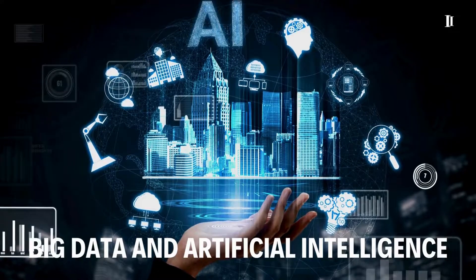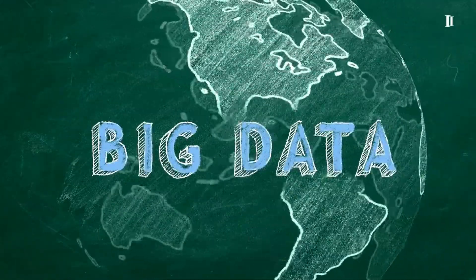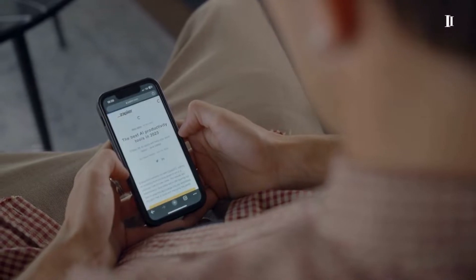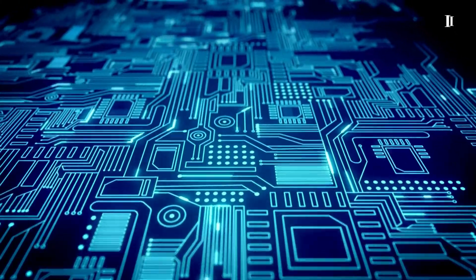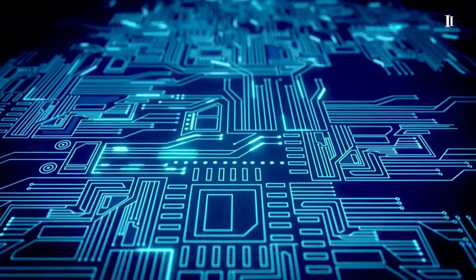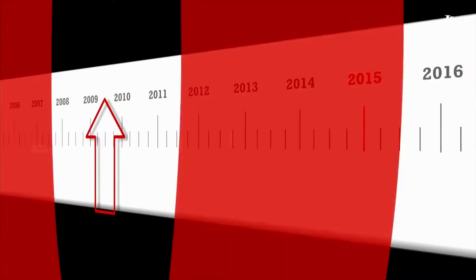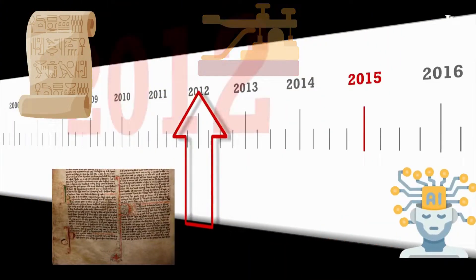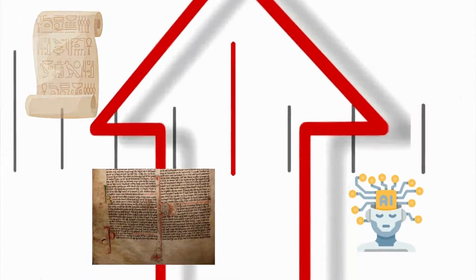Today we find ourselves in the age of Big Data and Artificial Intelligence. Our smartphones, smart devices, and online activities generate immense amounts of data every second. Machine learning algorithms analyze this data, providing insights and predictions that were once unimaginable. The history of data is an ongoing story, continually shaped by technological advancements and the evolving needs of society. The journey from ancient inscriptions to the era of Big Data reflects humanity's constant quest to organize, understand, and leverage information for various purposes.